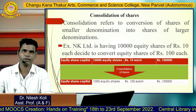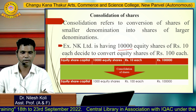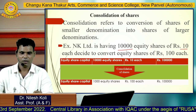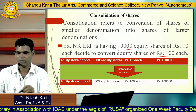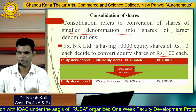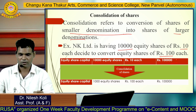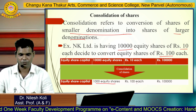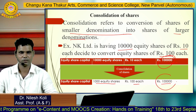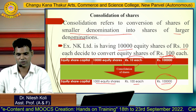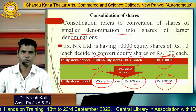Consolidation of shares means conversion of shares of smaller denomination into shares of larger denomination. Example: NK Ltd. has 10,000 equity shares of Rs. 10 each and decides to convert them into equity shares of Rs. 100 each. The face value increases from Rs. 10 to Rs. 100, so the number of shares reduces from 10,000 to 1,000, while the total share capital remains Rs. 1 lakh. Only the value per share and number of shares change — the total share capital does not change. This is called consolidation of shares.